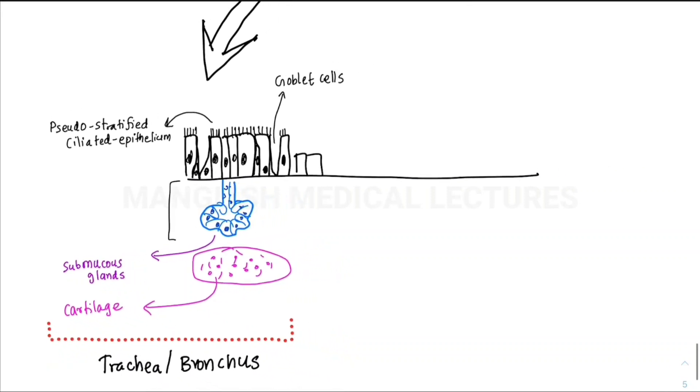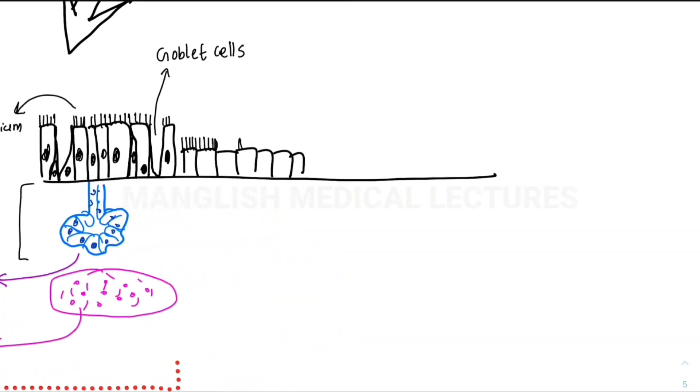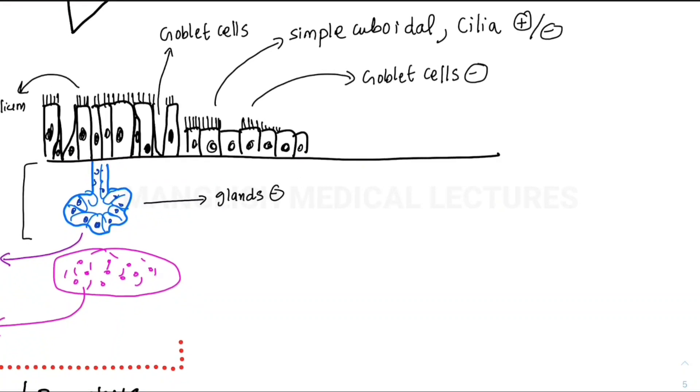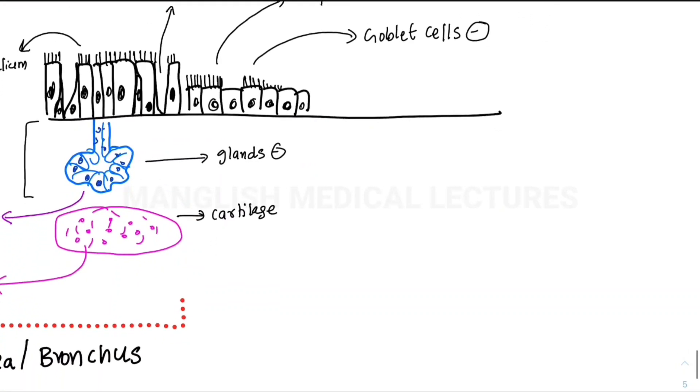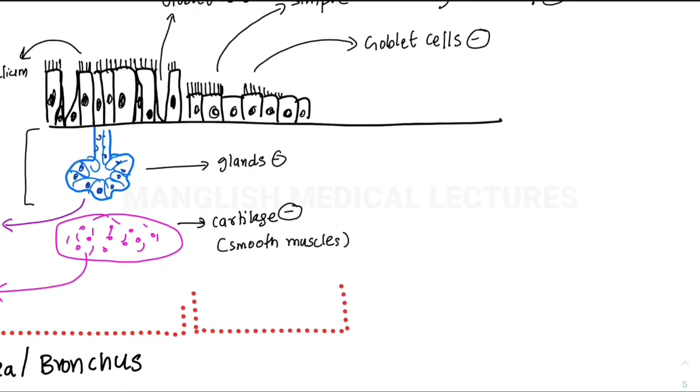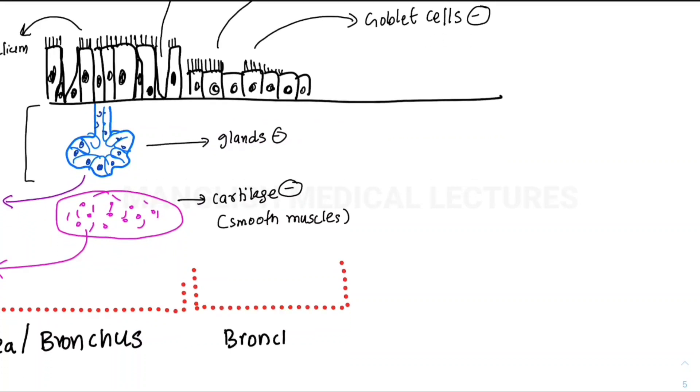Now let's see the change in bronchioles. The epithelium is becoming more cuboidal in nature. The cilia is decreasing in number, and the goblet cells are absent. In the submucous layer, the glands are absent, and cartilage is also absent, but there is presence of smooth muscles.